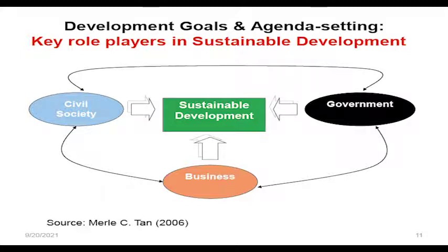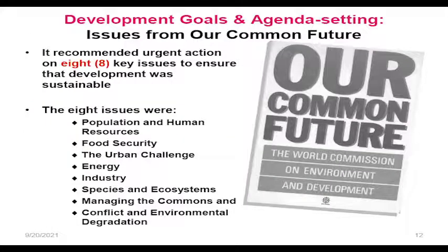Our Common Future identified eight key issues that would ensure development was sustainable: population and human resources, food security, the urban challenge, energy, industry, species and ecosystems, managing the commons, and conflict and environmental degradation. When we talk about managing the commons, we speak about the tragedy of the commons — common property is not usually protected. Among such common properties we have the atmosphere, waters, and air. No one claims the rights of these, so it is easy to degrade them, and we must act urgently.